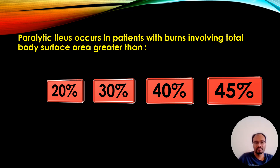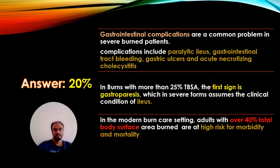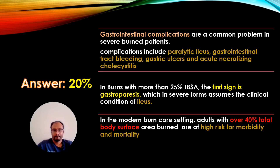The next question: Paralytic ileus occurs in patients with burns involving total body surface area greater than: 20%, 30%, 40%, or 45%. The correct answer is 20%. Gastrointestinal complications are a common problem in severe burn patients, including paralytic ileus, GI tract bleeding, gastric ulcers, and acute necrotizing cholecystitis. In burns with more than 25% TBSA, the first sign is gastroparesis, which in severe form becomes ileus. Adults with more than 40% TBSA burns are considered high risk for morbidity and mortality.